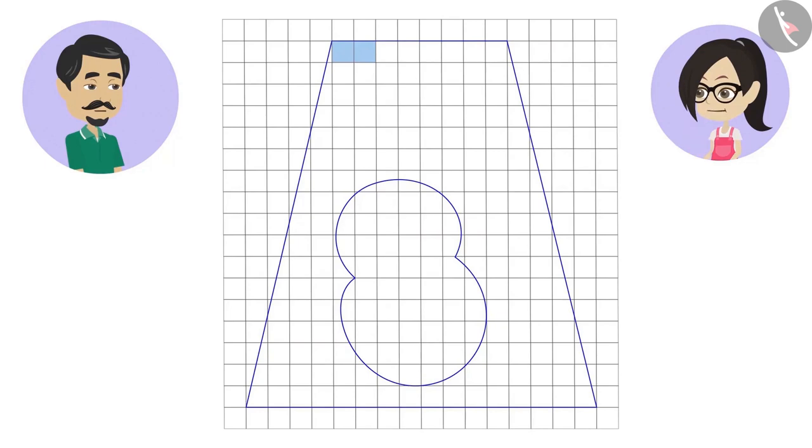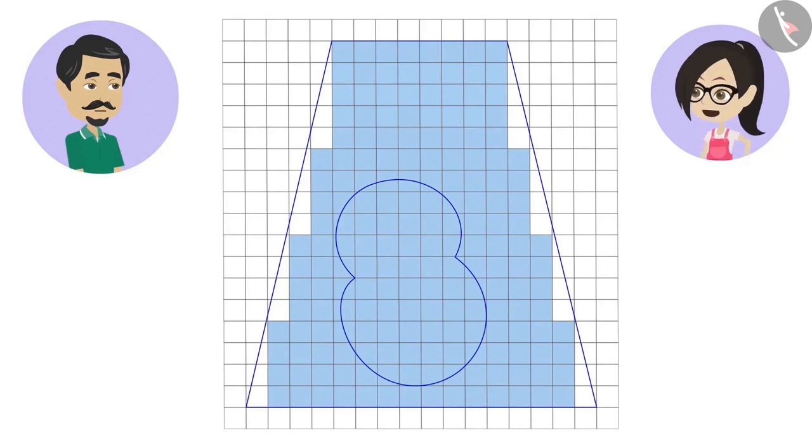One, two, three, four... 183, 184. The number of squares completely covered by the farm is equal to 184.